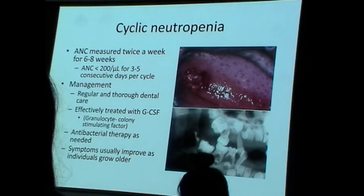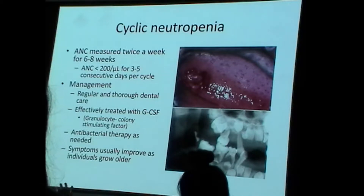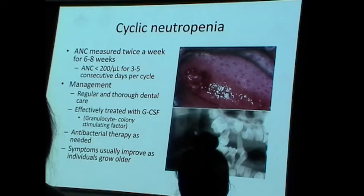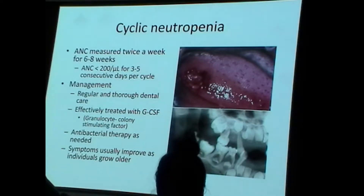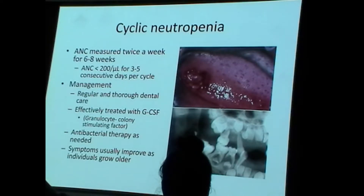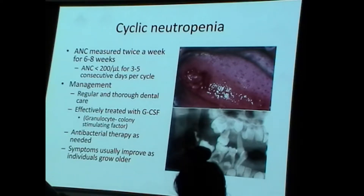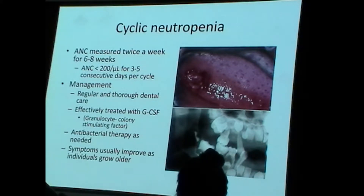These individuals can be treated with G-CSF — granulocyte colony-stimulating factor — a growth factor that specifically stimulates granulocytes. Neutrophils are granulocytes. Other granulocytes in the blood include eosinophils and basophils.